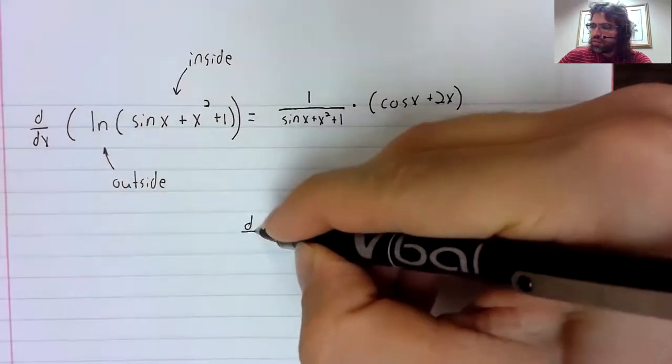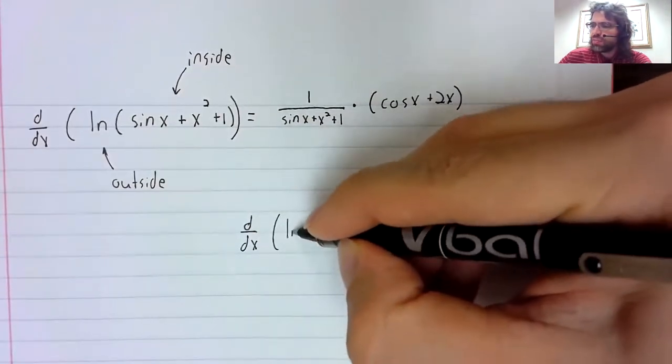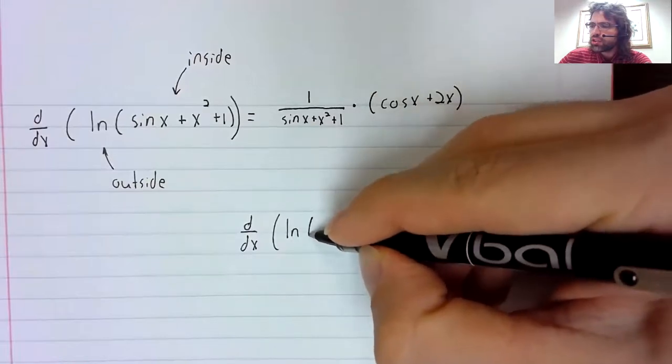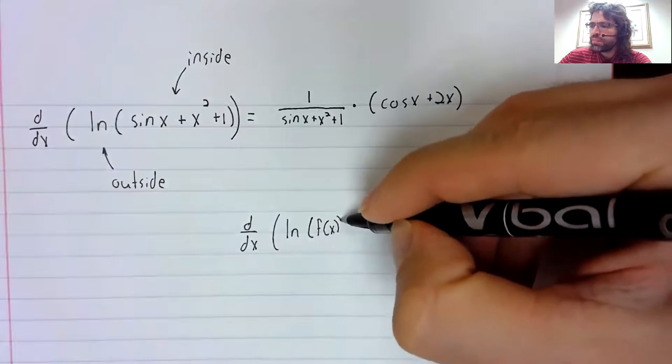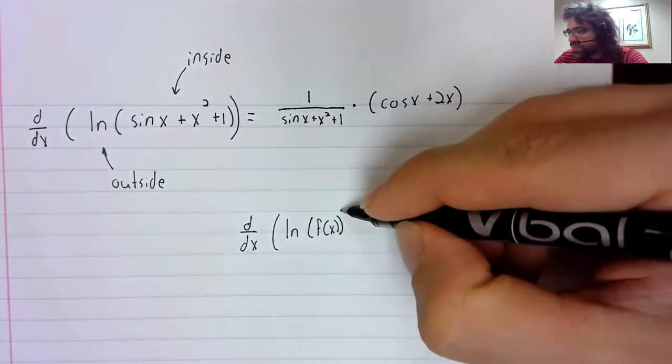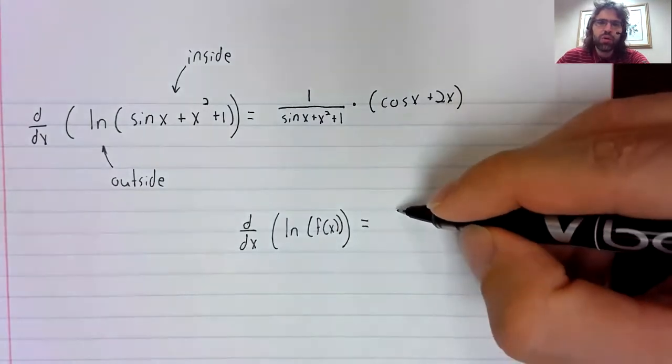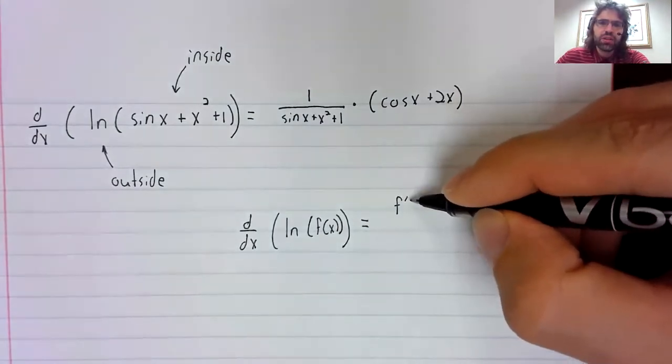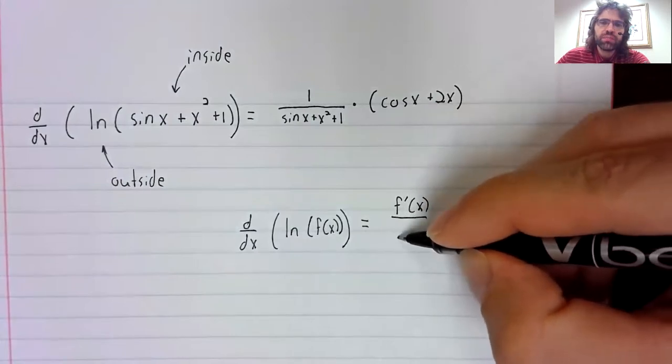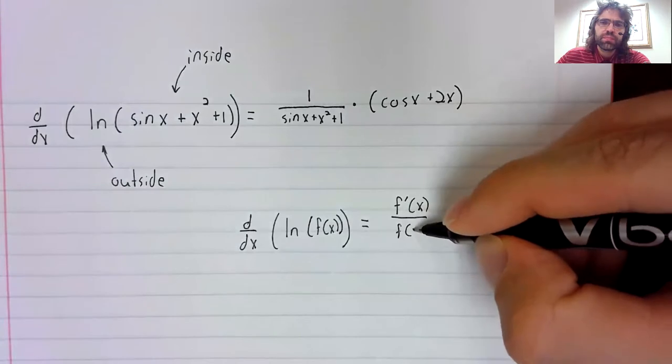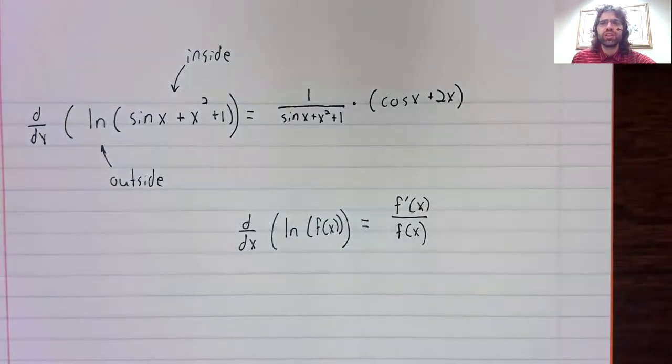If we wanted to generalize this: if we've got the natural log of a function, its derivative is always the derivative of the function divided by the function.